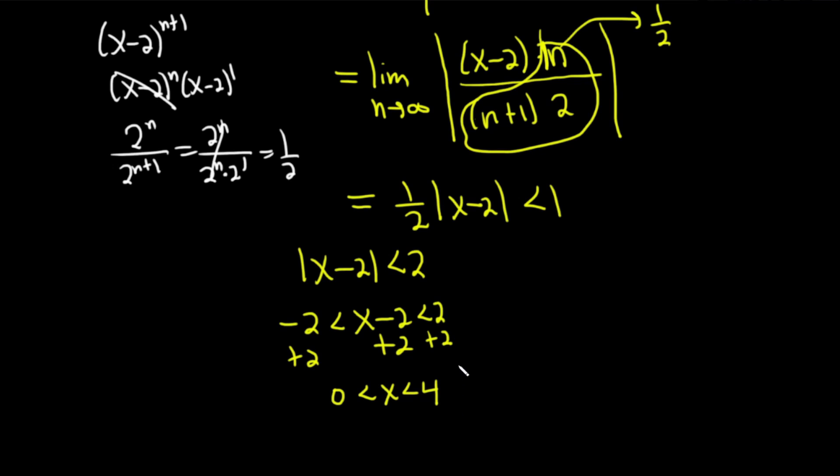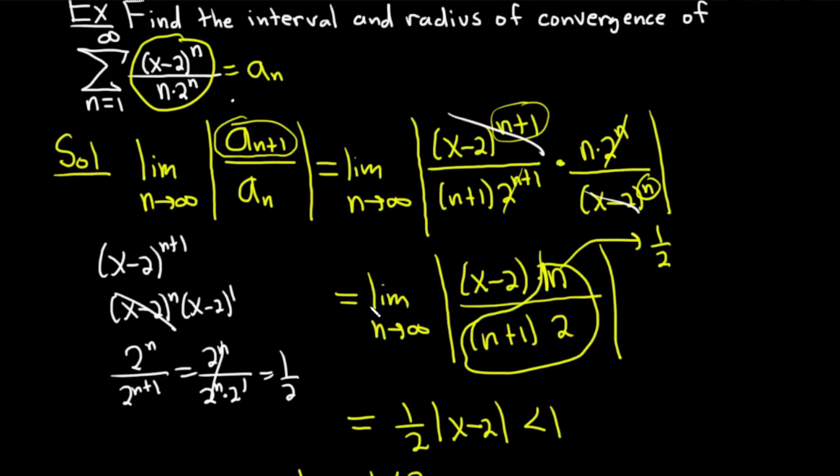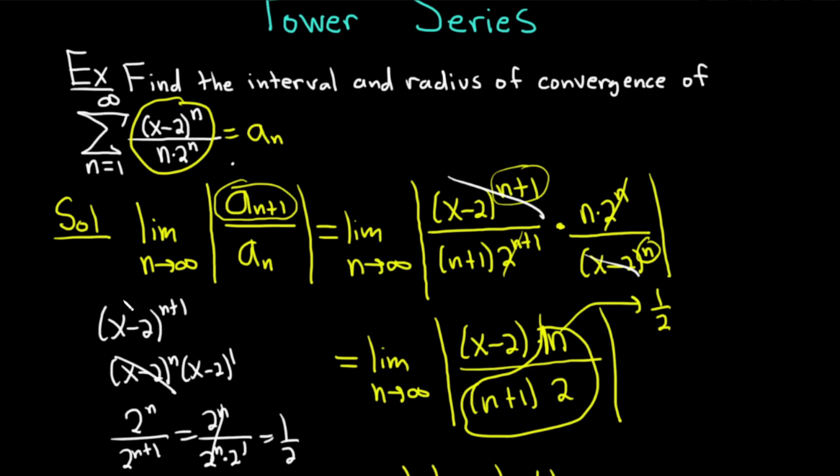So you get 0 less than x less than 4. Now comes the really important part. Let's recap what we did, because it's the same in every single problem.